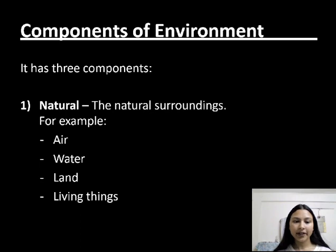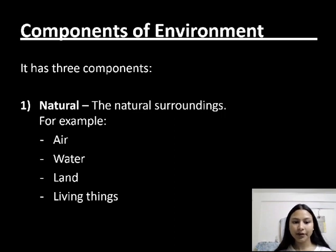Components of environment. It has three components. First, natural — the natural surrounding. For example, air, water, land, and living things. These are all included in natural components.